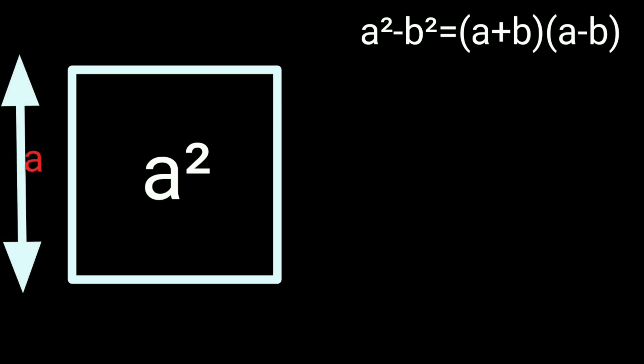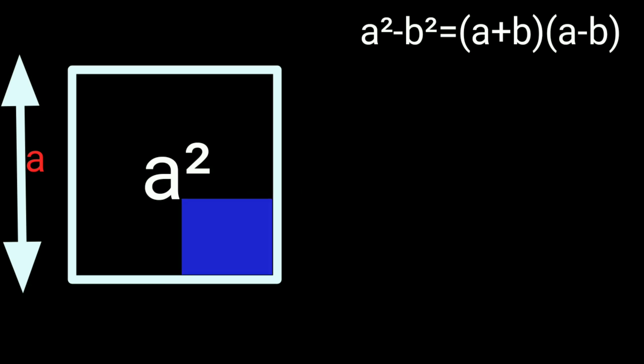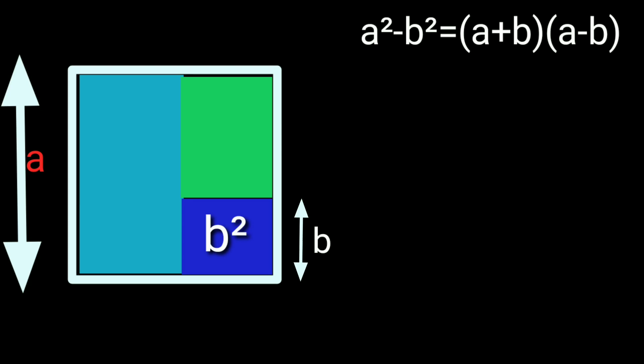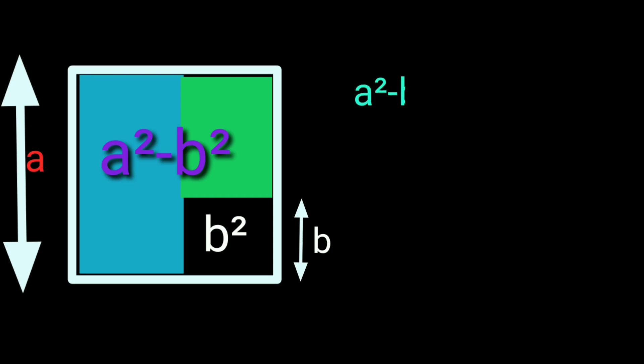Now subtract a small square whose area is b², so its length will be b units. Look at the shaded portion - it is a² - b². But we need to prove a² - b² equals (a + b)(a - b).